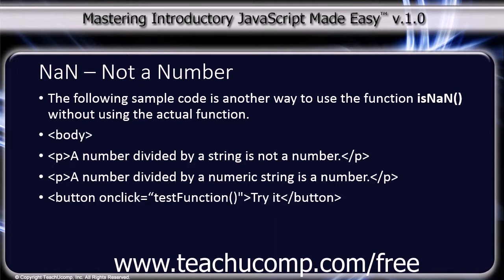A button tag with an onClick attribute set to call the test function. The button label is 'Try it.' Below the button there is a paragraph tag with an ID of 'test' followed by the close body tag.